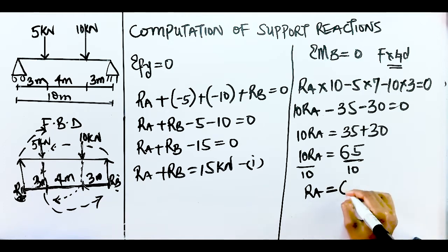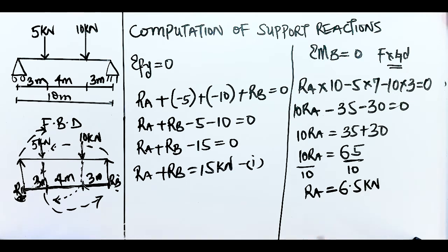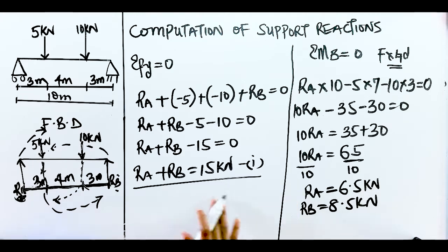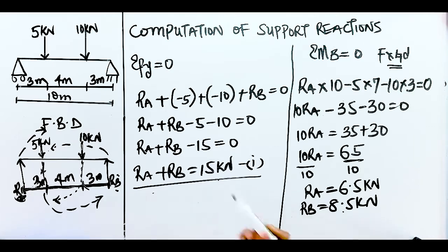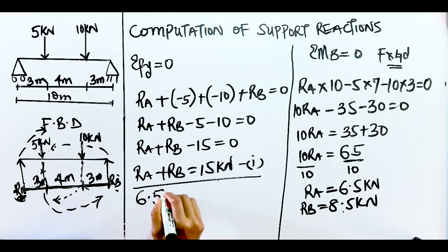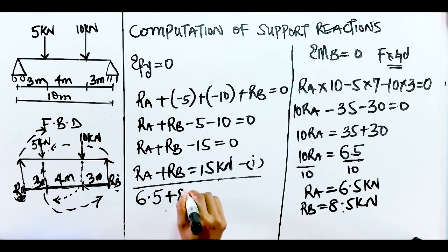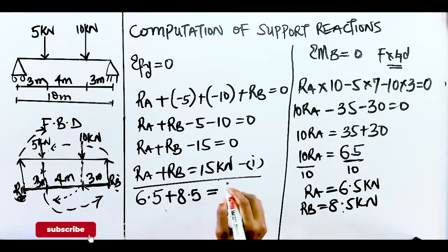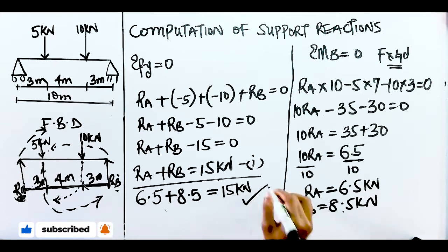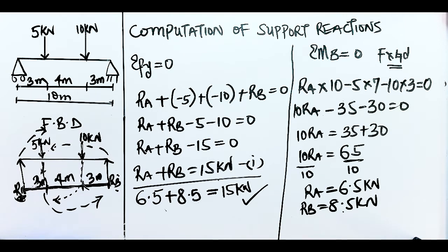Now we have both values: RA = 6.5 kN and RB = 8.5 kN. From Equation 1, RA + RB = 15 kN. Substituting: 6.5 + 8.5 = 15 kN — correct! If the sum doesn't equal 15, something went wrong and you'd need to try again. So we've confirmed our answers are correct.